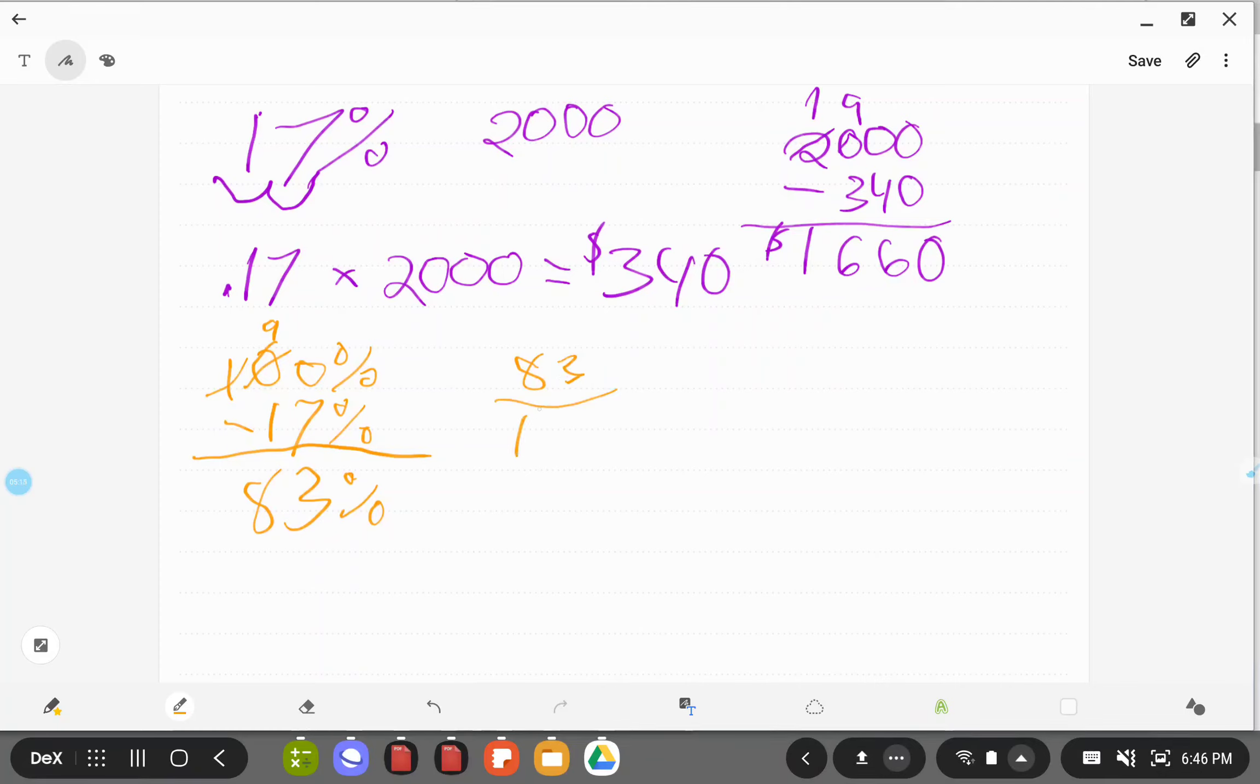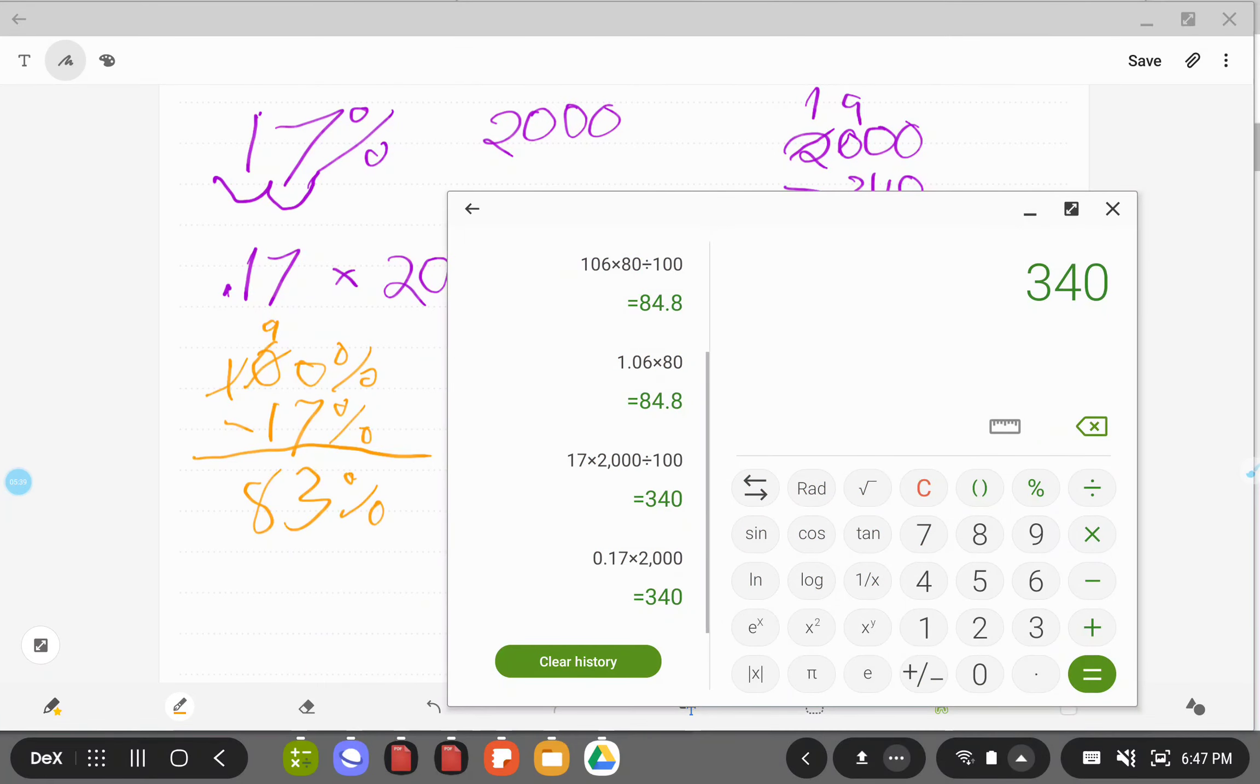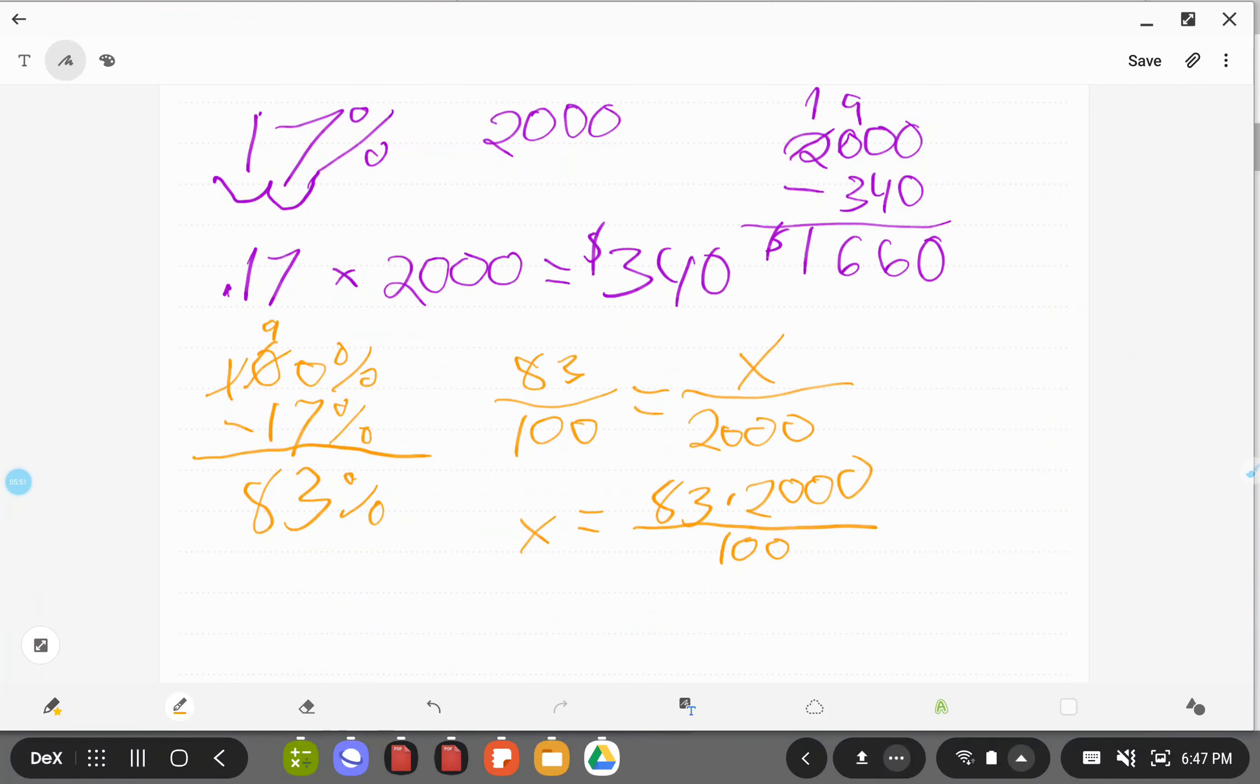So to figure it out now, we would take our 83 over 100 if you do it with the proportions, and you're equaling your original amount of 2000. And we don't know what the amount you're taking home is, but that's going to be our X. So now we're taking X equals, multiplying our opposite, 83 times 2000, and dividing our 100, because we're multiplying opposites and dividing the leftover piece just like before. So that gives us 83 times 2000 divided by 100, 1,660, which is the dollars. And that's the amount you take home.